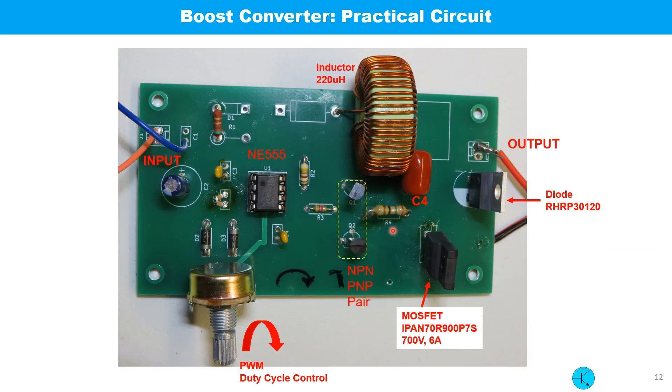This is the practical circuit on a PCB. This is the 555 timer IC and this is the potentiometer. By varying the potentiometer we can change the duty cycle. This is the inductor, 220 microhenry, and this is the PNP pair to drive the MOSFET. This is the MOSFET and this is the high speed diode.